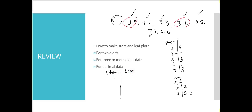Our final stem and leaf plot shows: 3 | 6, 5 | 3, 6 | 6, 7 | 8, 10 | 2, 11 | 2 5. Remember, it's important to write the key — for example, 3 | 6 means 3.6 — so people won't confuse the values with whole numbers. You can verify: 3.6, 5.3, 6.6, 7.8, 10.2, 11.2, and 11.5. This is how we make a stem and leaf plot for decimals.